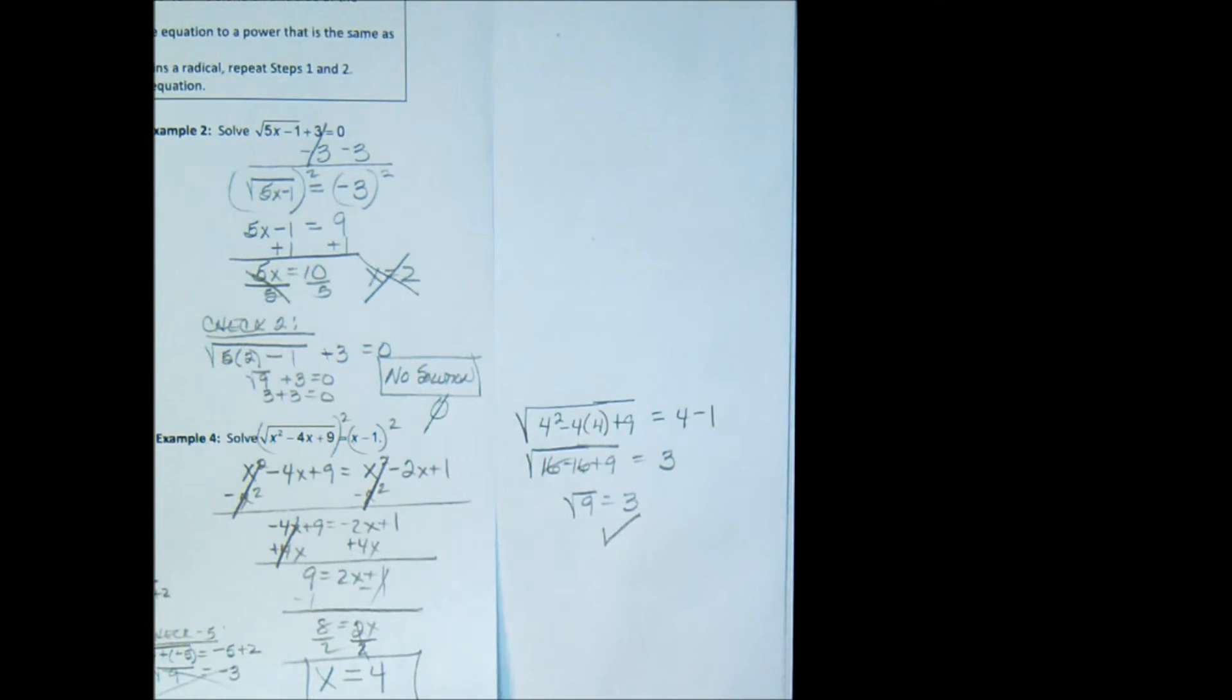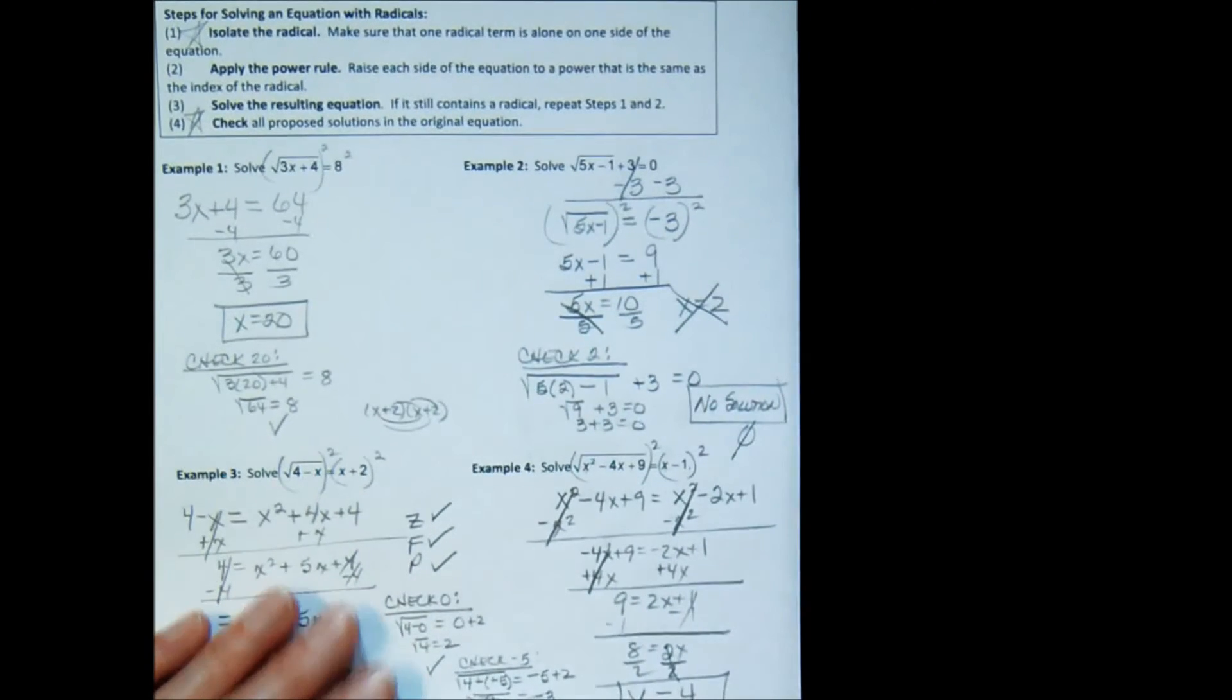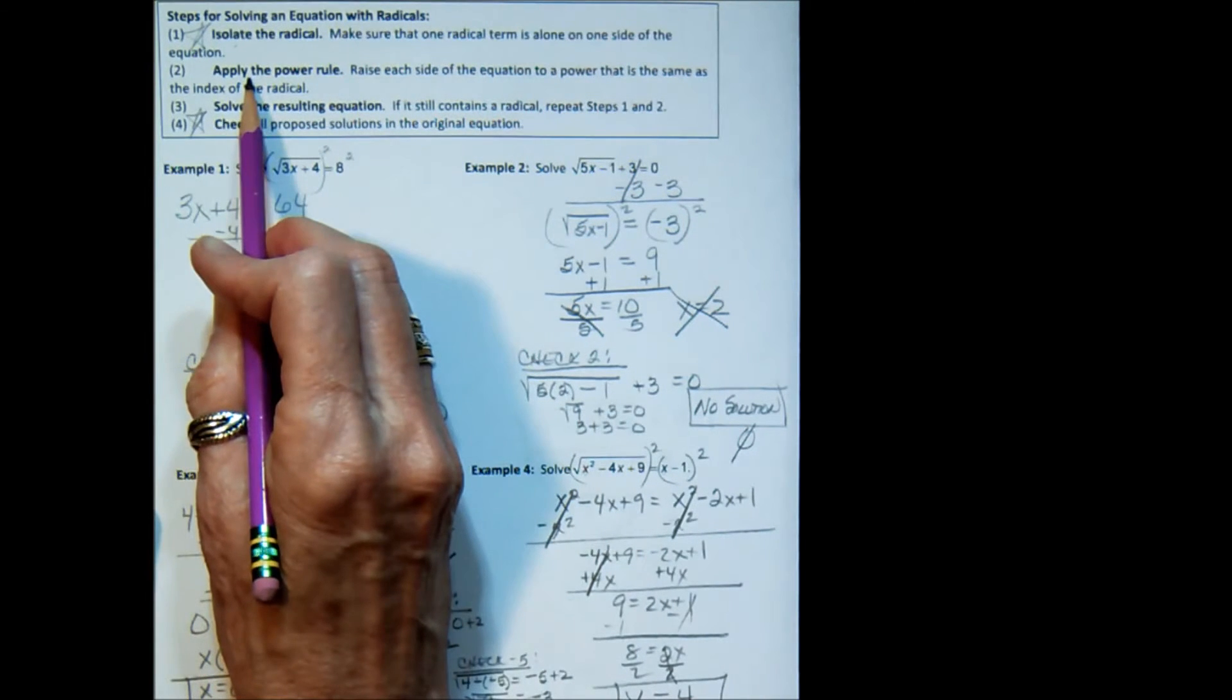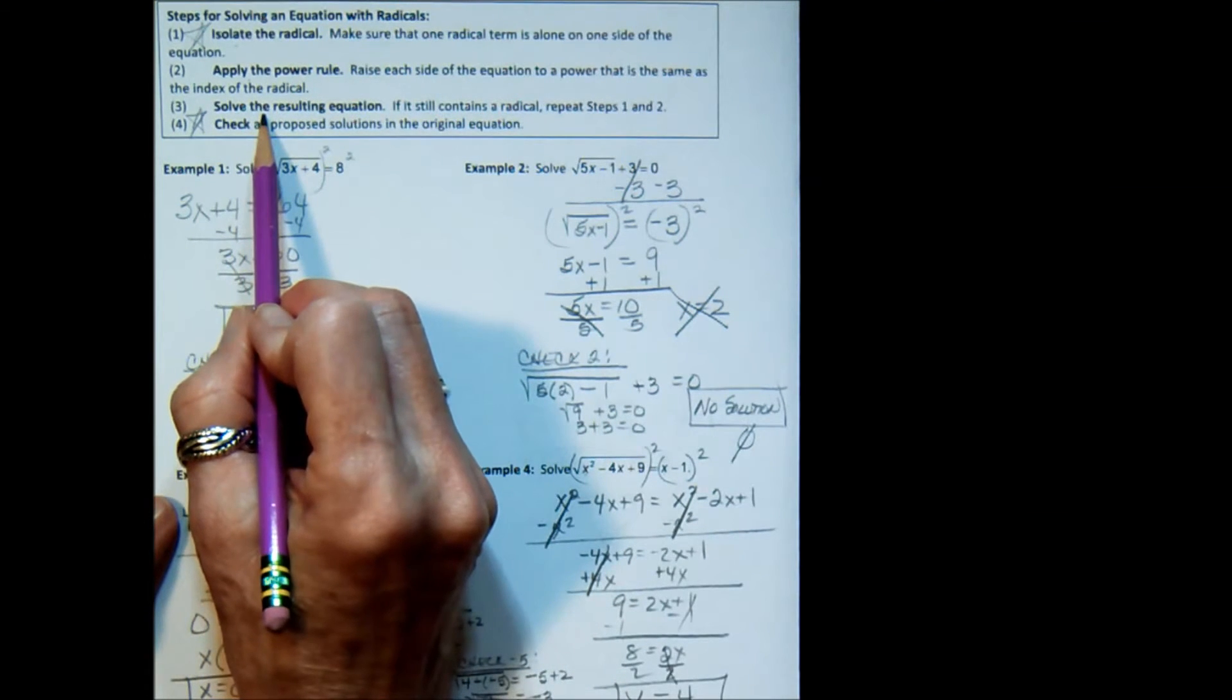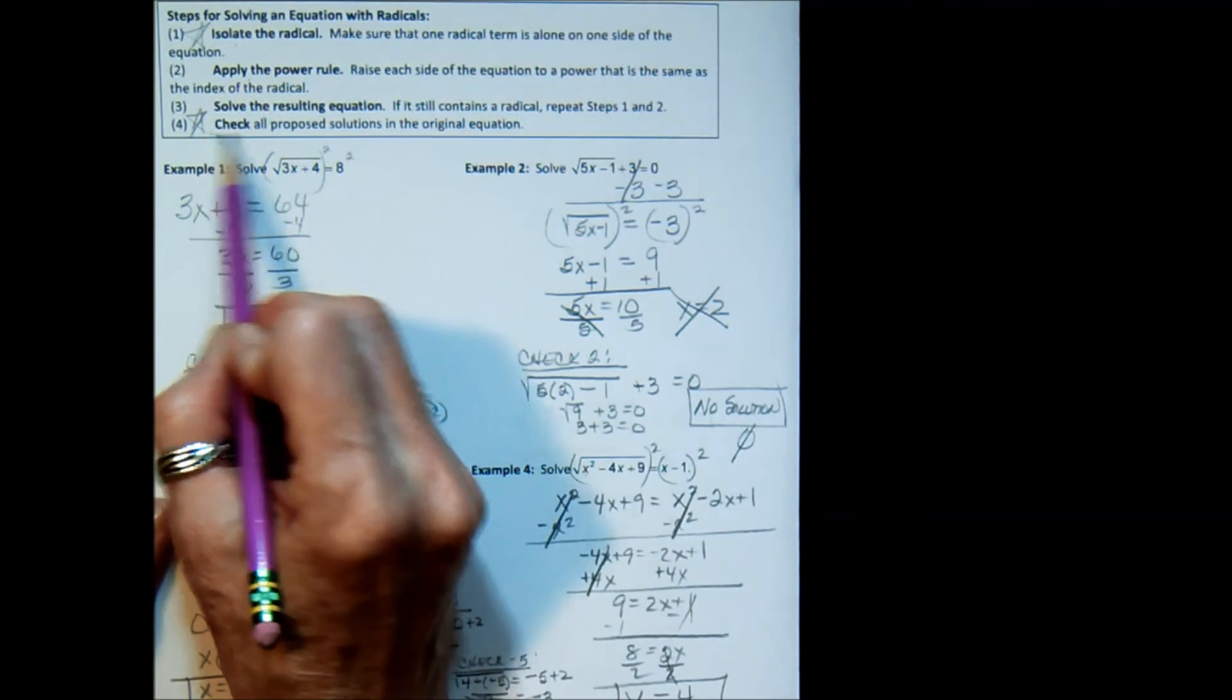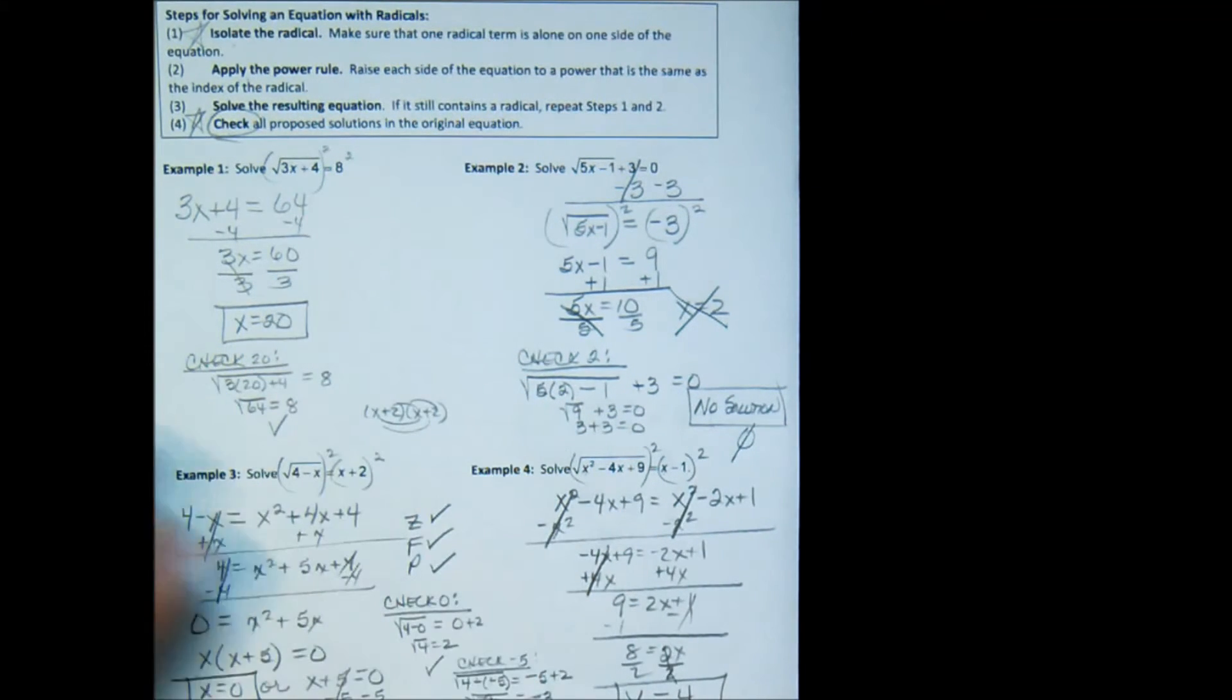So let's remember that when solving a radical equation, isolate the radical. Square both sides if it's a square root. Cube both sides if it's a cube root. Solve the equation that you get when you're finished raising it to a power. And then always, always, always check your answer to see if it's extraneous.